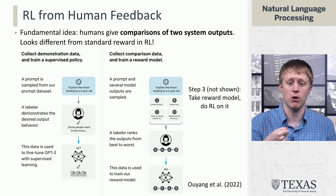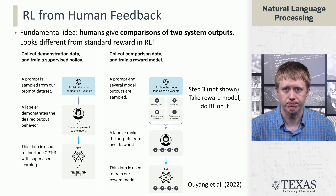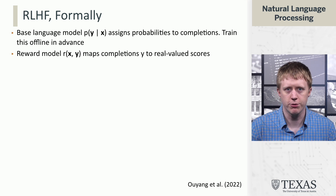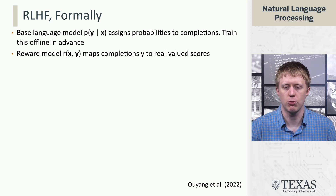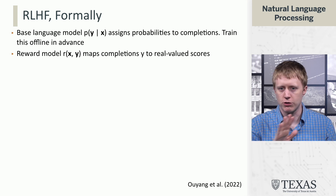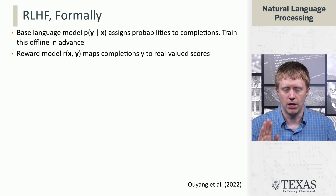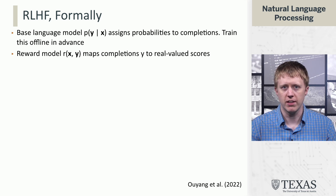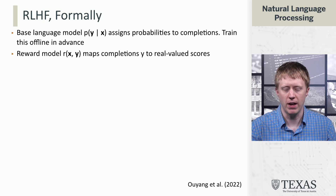That reward model is what you do RL on. More formally, we have our base language model — think of it as GPT-3 — which we train in advance and then set aside. Then we have our reward model, which we're going to learn, that maps completions Y to real-valued scores.